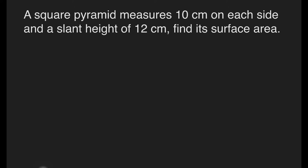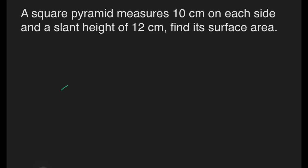How does a square pyramid look? A square pyramid is a pyramid with a square base, four triangular sides, five vertices, and eight edges. The base of this pyramid is a square and the top point is the apex. The Pyramids of Giza are one of the oldest examples of square pyramids.